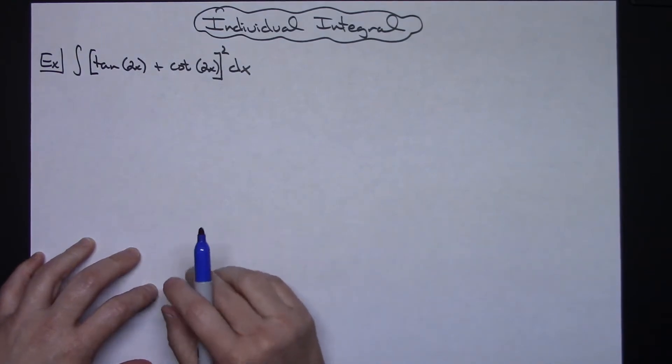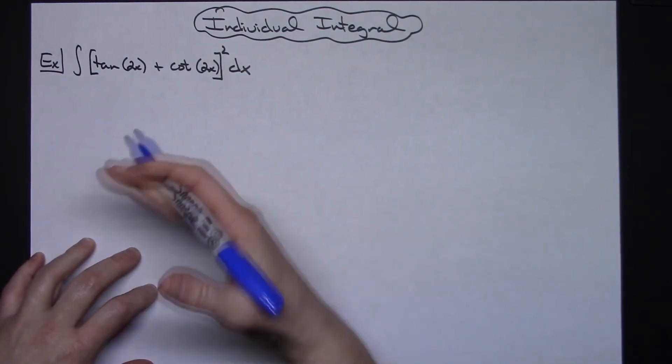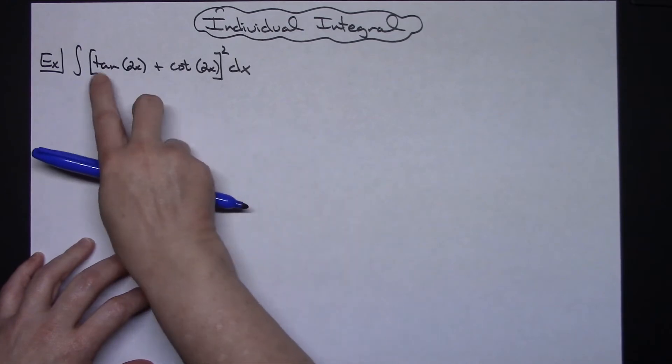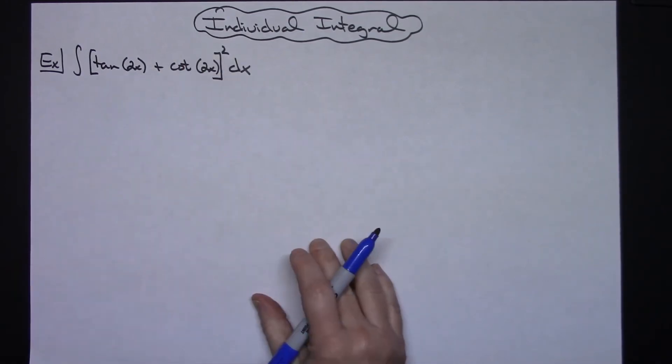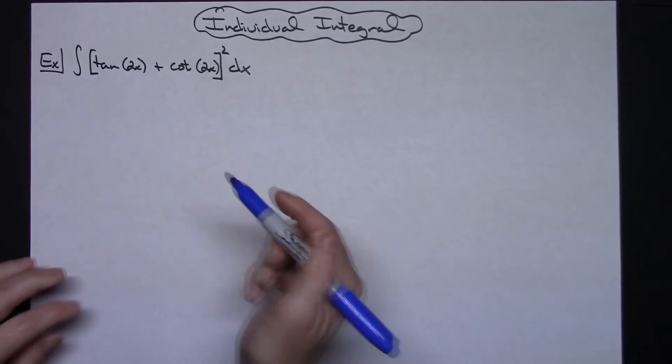Now right off the bat we cannot see any obvious substitution here. I've got a tangent, I've got a cotangent, and so there's not going to be an obvious substitution. So for that reason we have to take another approach.